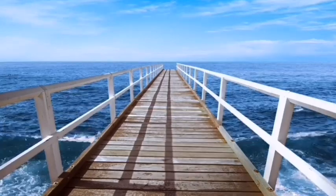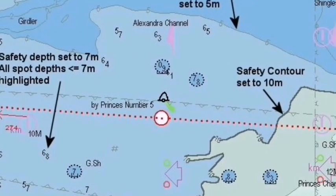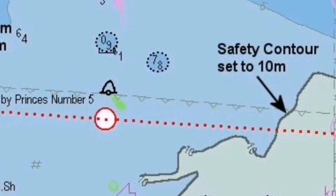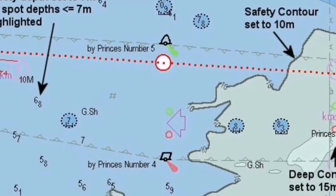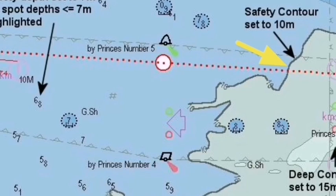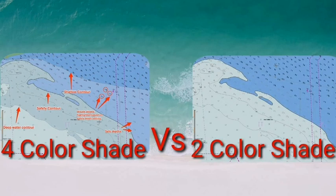Now let's look at a practical example to understand this clearly. Here safety depth is set to 7 meters, so all spot depths below 7 meters are highlighted in dark color. The safety contour is set to 10 meters because there is no 7-meter contour available in the ENC. Since the safety depth is 7 meters, you can see the passage plan crosses the safety contour line and passes over areas where the depth is more than 7 meters. Once the vessel crosses the safety contour line, ECDIS will generate an anti-grounding alarm and the navigator should be aware of the safety depth ahead. To get a clear idea about the four-color shade and two-color shade available in ENC, please watch the linked end-screen video.